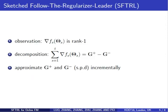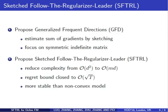Here, we reduce the complexity by sketching. Note that the gradient of each loss function is a rank-one matrix. Hence, we can decompose the sum of gradients as the difference of two semi-positive definite matrices, and each of them can be approximated incrementally by frequent directions. We propose generalized frequent directions to estimate the sum of gradients, which is symmetric but indefinite.